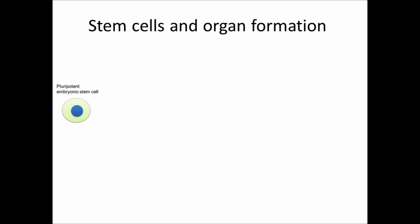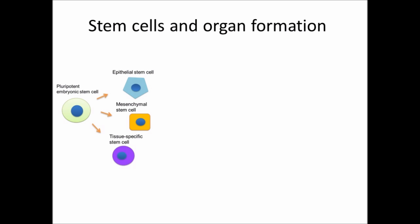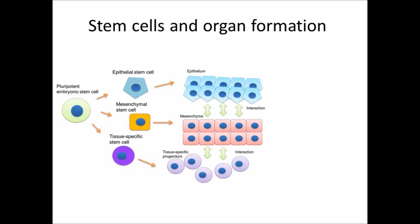Before we talk about oral stem cells, let's take a look at stem cells and organ formation. In an organism, all tissues are built from pluripotent embryonic stem cells. The embryonic stem cells differentiate into multipotent stem cells, including epithelial, mesenchymal, and other tissue-specific stem cells. Interactions among these cells initiate and regulate developmental processes.